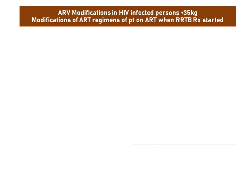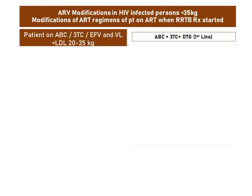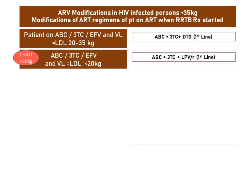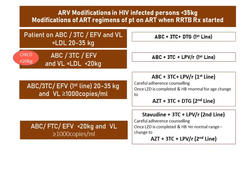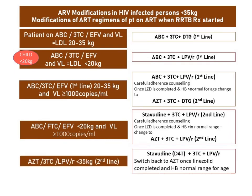For children's regimens the principle stays exactly the same. Children who are suppressed on abacavir, 3TC and efavirenz and weigh over 20 kg can be switched to abacavir, 3TC and dolutegravir; if under 20 kg, use lopinavir-ritonavir instead. Remember, if they are over 35 kg and over 10 years they qualify for TLD. Children with a viral load over 1000 and over 20 kg will be switched to abacavir, 3TC and lopinavir-ritonavir until linezolid is completed, then switched to the new second-line with dolutegravir. If the child is under 20 kg, stavudine can be used temporarily if available, and the child switched to AZT, 3TC and lopinavir once linezolid is completed — the same approach applies for children already on second-line.